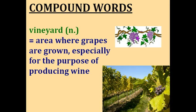Vineyard. A vine is a type of plant that climbs up a surface as it grows — grapes grow on vines. And a yard is an area of land. So a vineyard is an area where grapes are grown, especially for the purpose of producing wine.